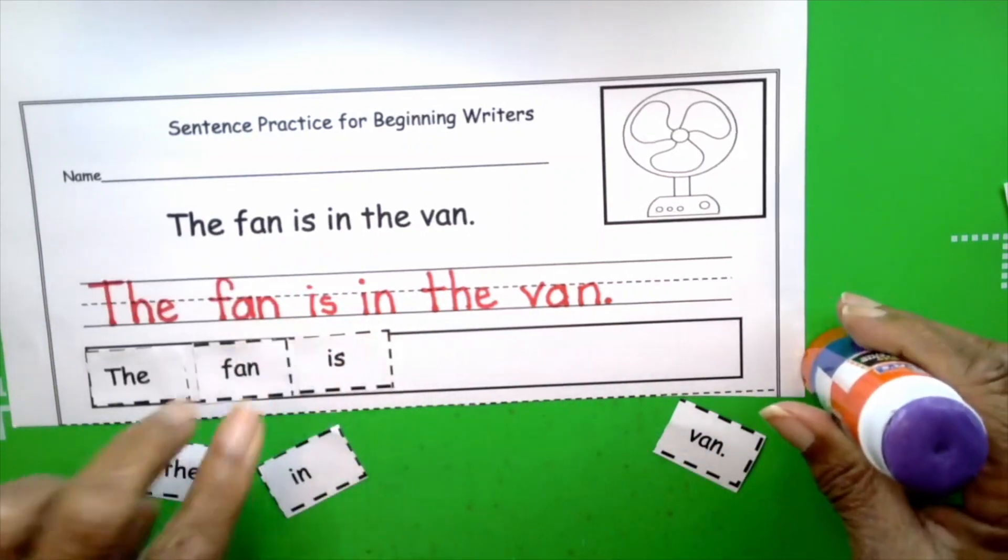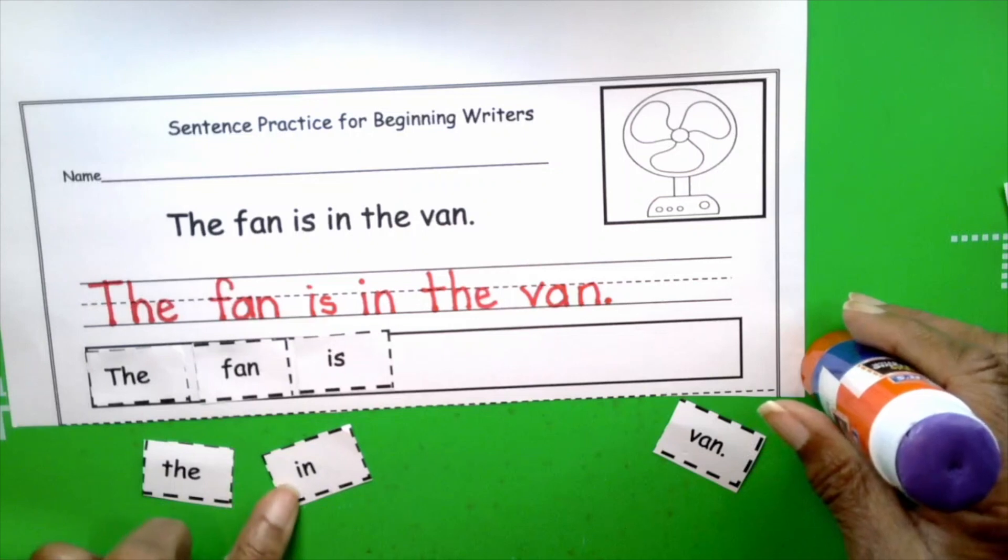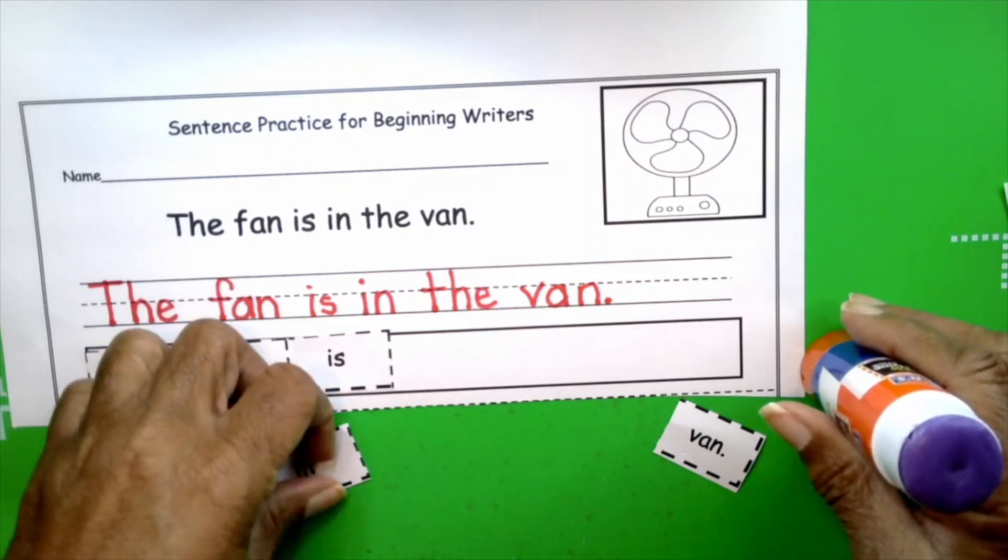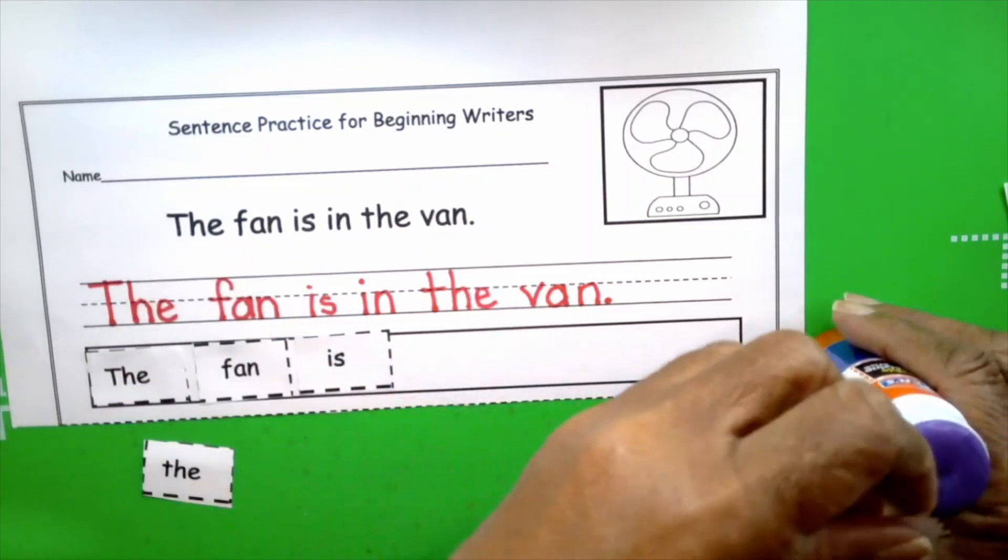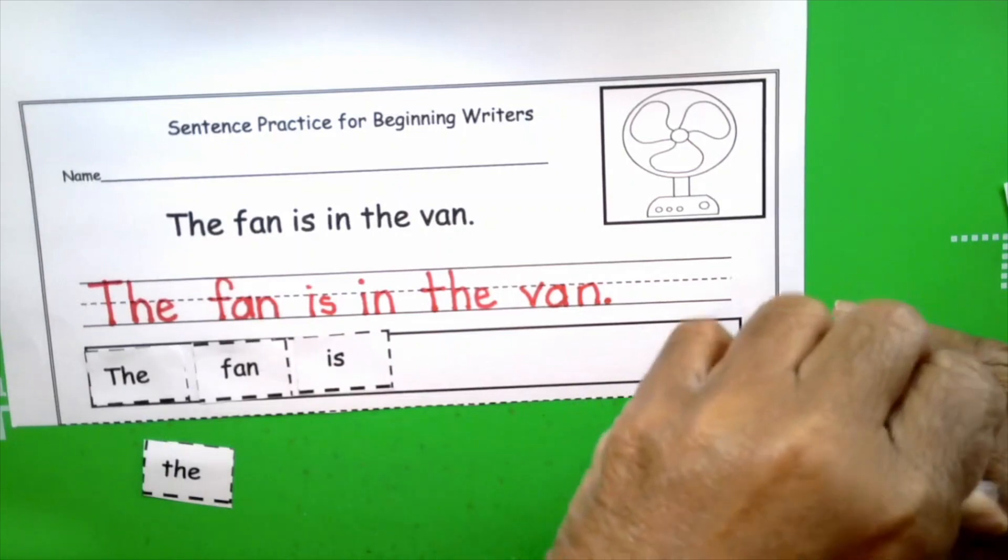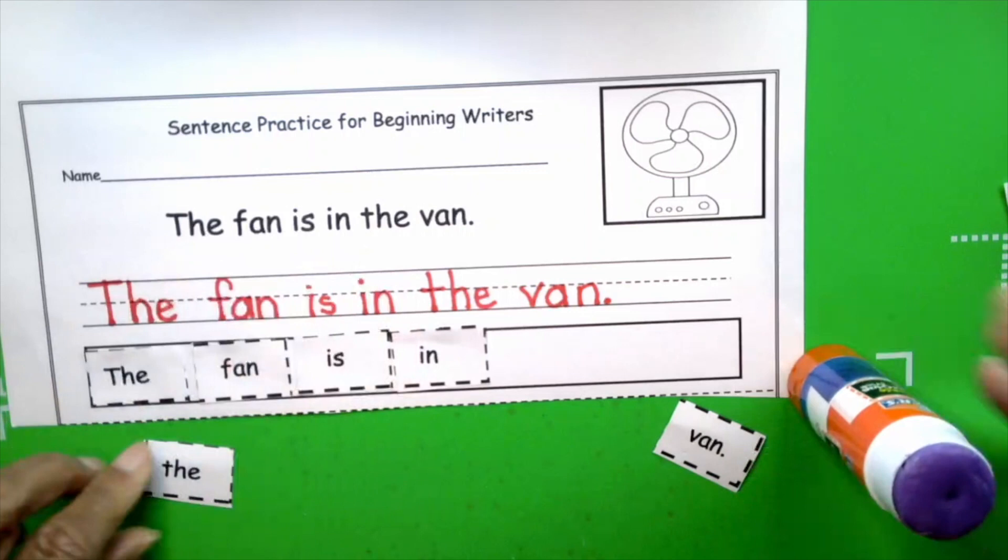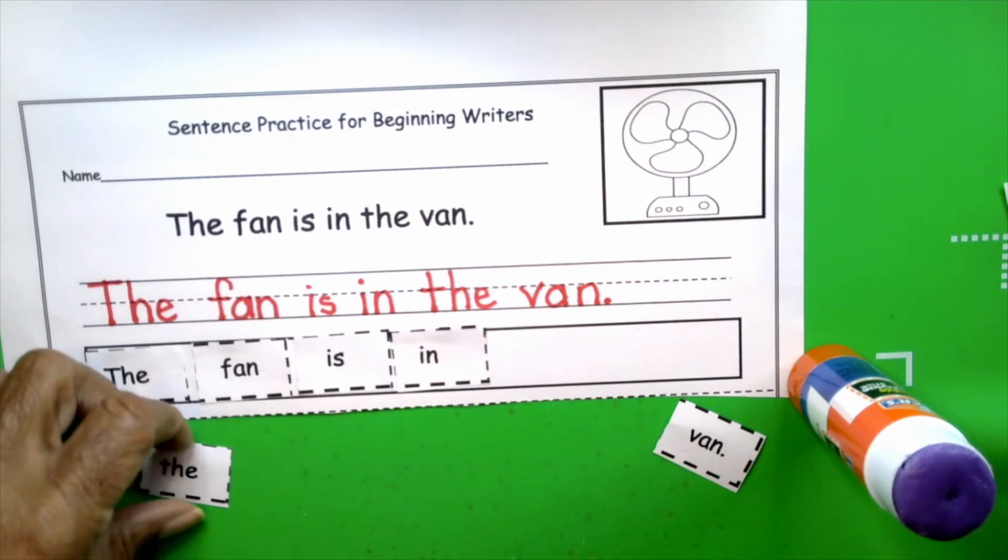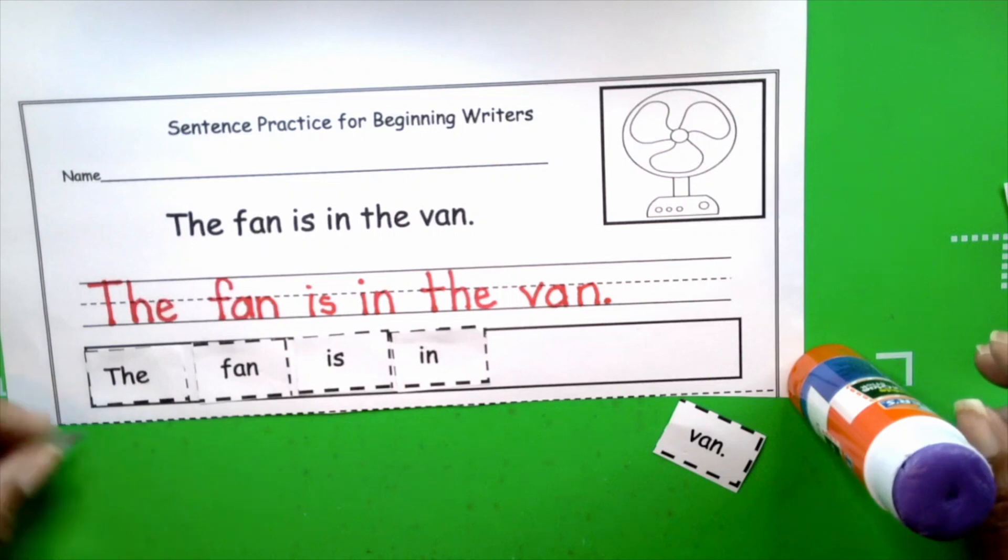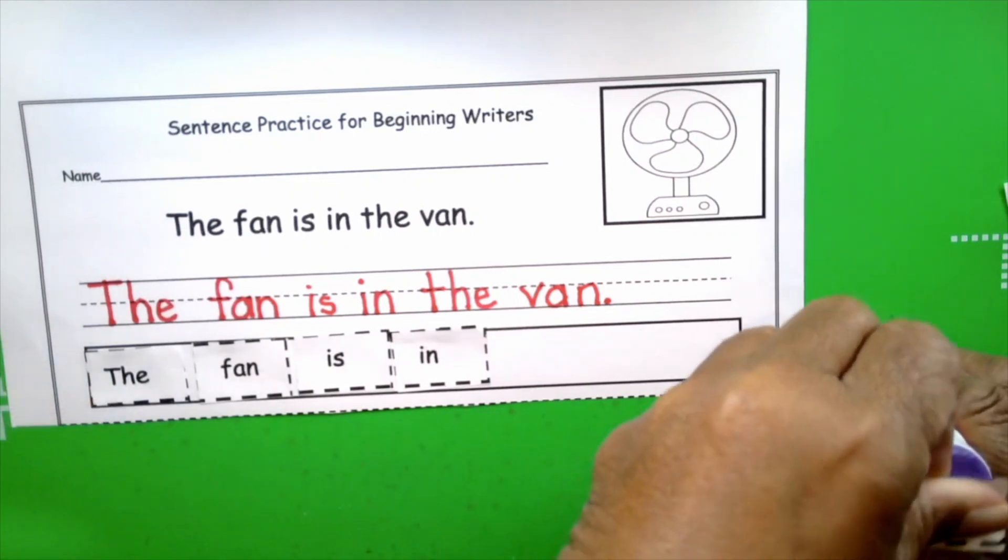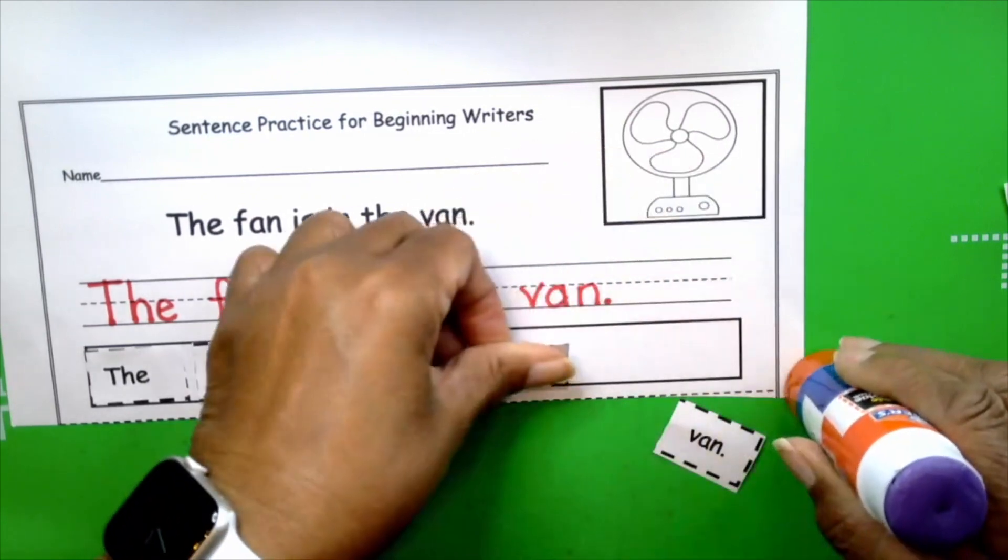And where is the van? In. The fan is in. And now we get to use the word the with the lowercase letter, with the lowercase t, because it's within the sentence. It's not at the beginning of the sentence. The fan is in the.